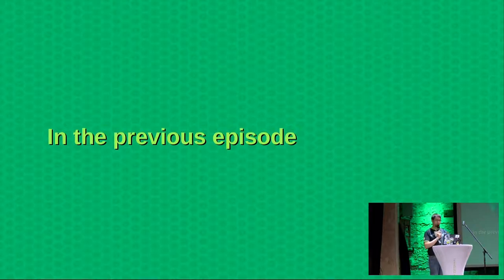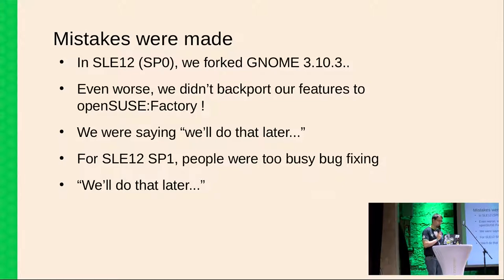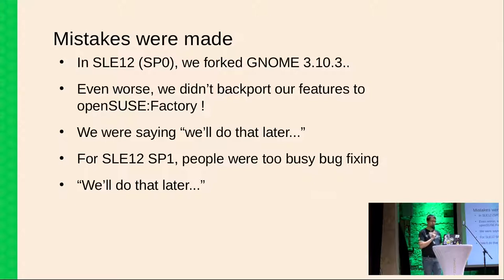In the previous episode last year, we talked about mistakes that were made when we worked on SLEE 12. I will use the GNOME environment as the ongoing example, but then I will expand a bit further. For SLEE 12, we used GNOME 3.10.3 and we forked it. We used a version which was in factory back then and we did a lot of work on it: bug fixing due to bug reports from our beta testers, and we developed new features — for instance, the SLEE Classic mode in GnomeShell. And all of that, we never backported those features to OpenSUSE factory.